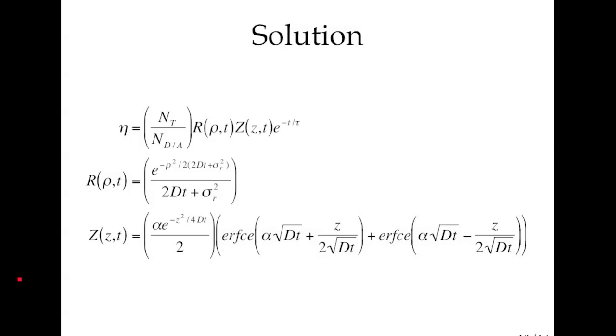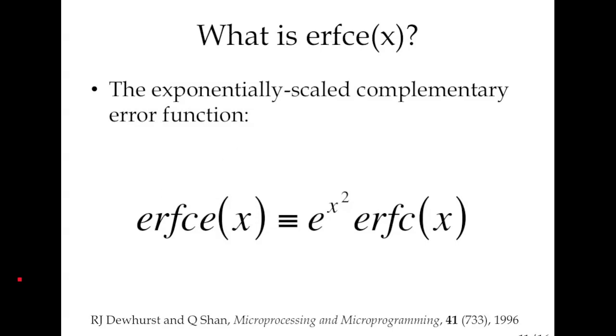In the z direction, you see a bit of a messier formula, but we also see a broadening effect here. And these are the exponentially scaled error functions, complementary error functions that I'll talk a little bit more about. And I should mention that this is the alpha from the Beer's Law absorption coefficient.